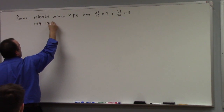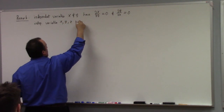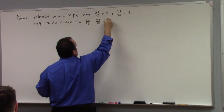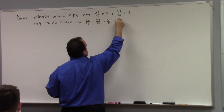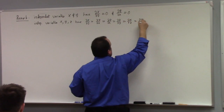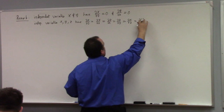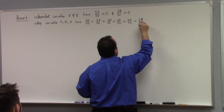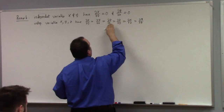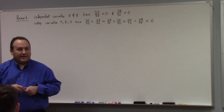For independent variables x, y, z: the partial of x with respect to y, the partial of x with respect to z, the partial of y with respect to x, the partial of y with respect to z, the partial of z with respect to x, the partial of z with respect to y — all of these are zero. Context matters.